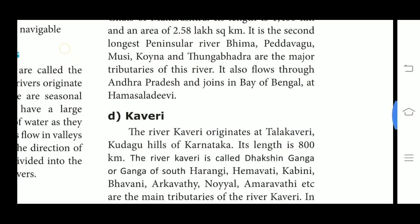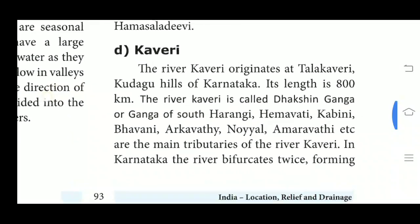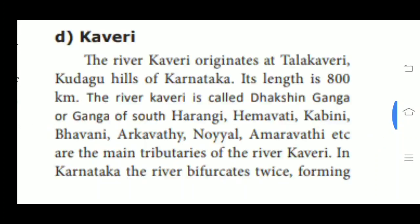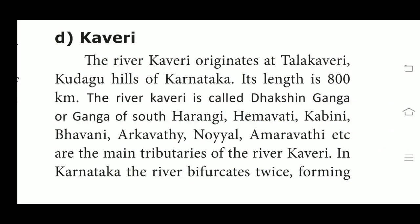Next, we see about river Kaveri. The river Kaveri originates at Talakaveri in the Kudagu hills of Karnataka. Its length is 800 km. The river Kaveri is called Dakshina Ganga or Ganga of the South. Harangi, Hemavathi, Kabini, Bhavani, Arkavathi, Noyyal and Amaravathi are the main tributaries of river Kaveri.